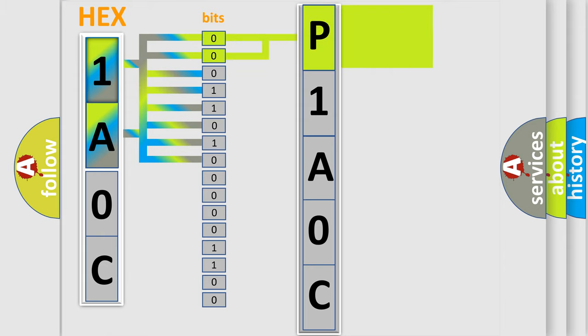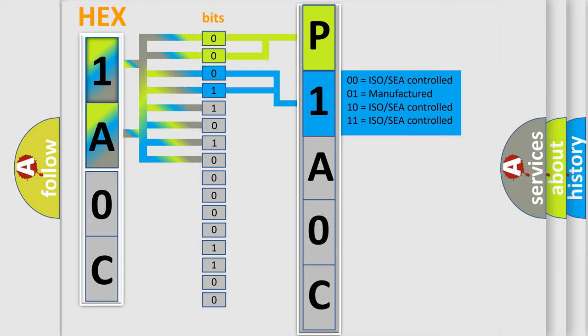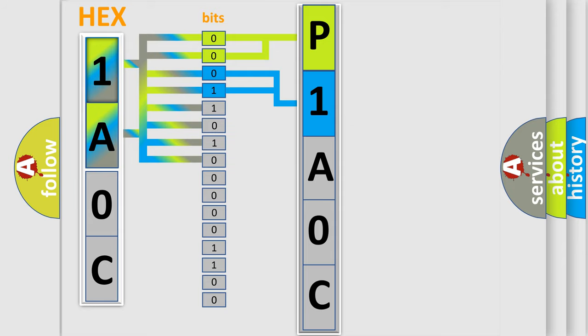By combining the first two bits, the basic character of the error code is expressed. The next two bits again determine the second character. The last bit styles of the first byte define the third character of the code.